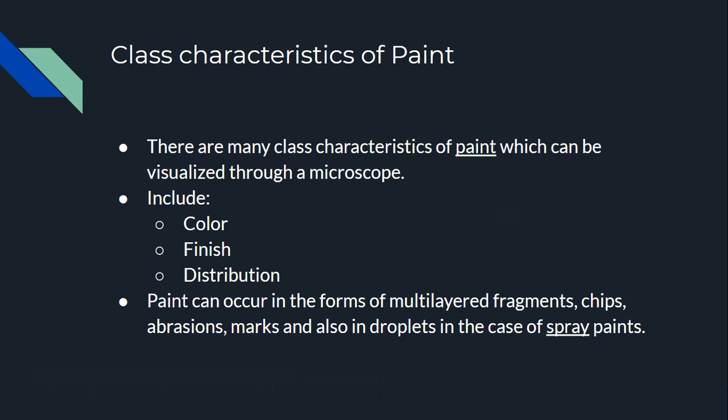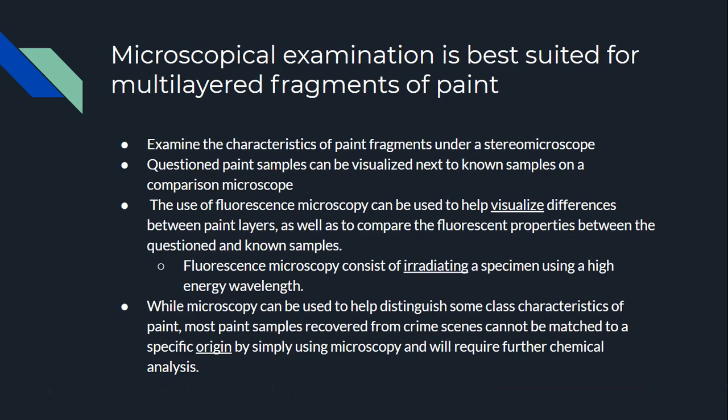Paint is going to mostly occur in multi-layered fragments or chips, abrasions, marks, and also droplets in the case of spray paints. Examining paint with a microscope is best suited for multi-layered fragments of paint, and we're going to look at the characteristics of the paint under what's called a stereo microscope.